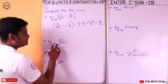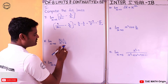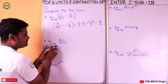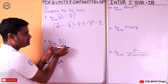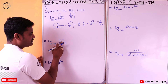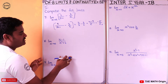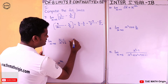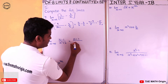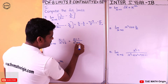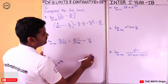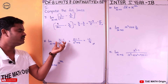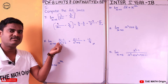Eighth question: limit x tends to 0 of (x - 1) by (x² + 4). The denominator is not zero at x = 0, so we substitute directly: (0 - 1) by (0² + 4) = -1 by 4. That is the derived value.